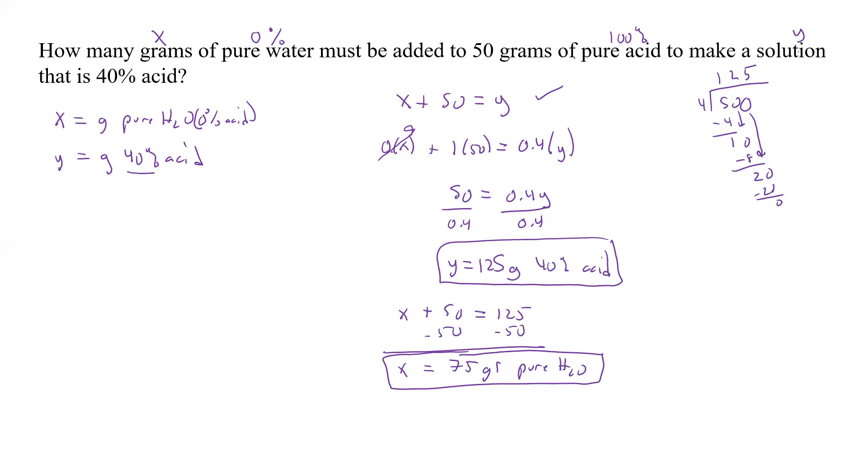Now does 0 times X, which is 75, plus 75, plus 1 times 50, equal 0.4 times the 125? Well, 0.4 times 125. So that's 20. That's 8, 9, 10. That's 5. Move it over 150. Yep. 50 equals 50. So those are the correct values.